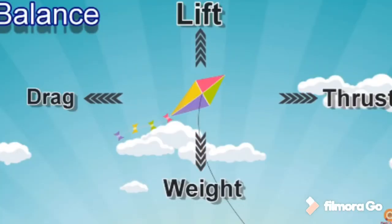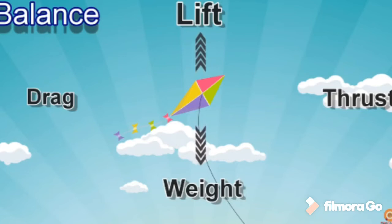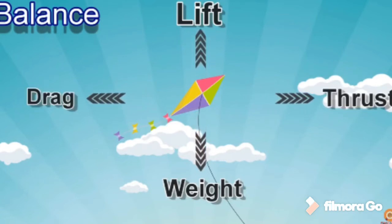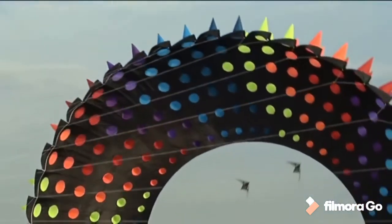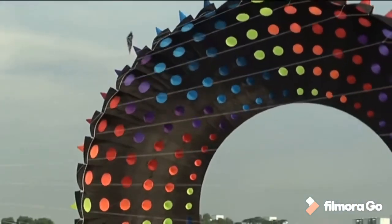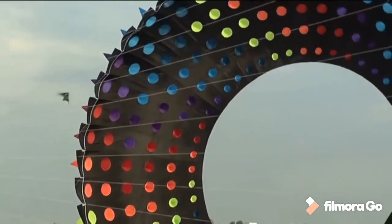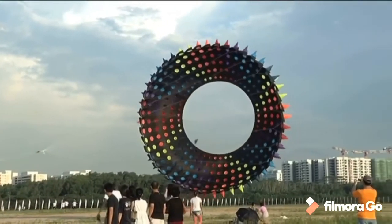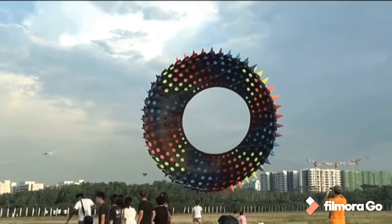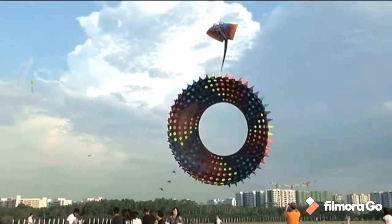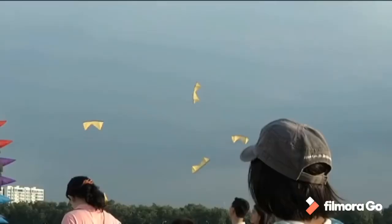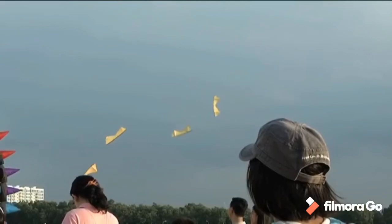To get your kite into the air, the force of lift must overcome the force of gravity holding the kite down. To keep it in the air, the force of thrust must be equal to the force of drag. These are important physics concepts that are easy to demonstrate with your kite.